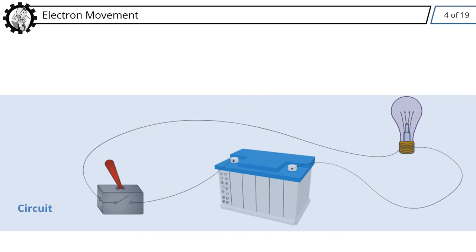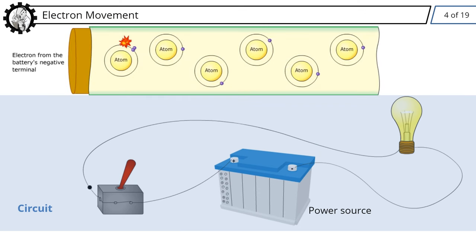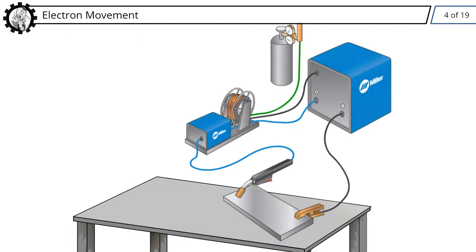By creating a circuit with a power source in line that creates voltage, we can push the electrons from one atom to the next. This creates the flow of electricity through a circuit. Let's look at how this flows through a welding circuit.